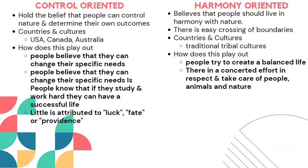Coming to the next topic: types of nature. There are three types — control oriented, harmony oriented, and constraint oriented. In control oriented nature, people hold the belief that they can control nature and determine the outcomes. Countries which follow this are USA, Canada, and Australia. People believe they can change their situation and know they have to study or work hard to get a successful life. Little is attributed to luck, fate, or providence.